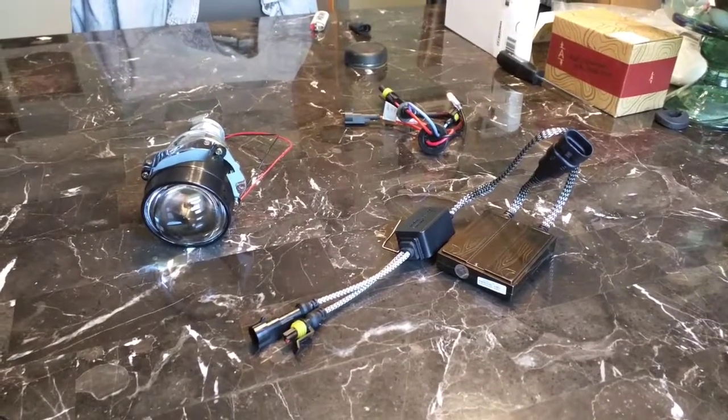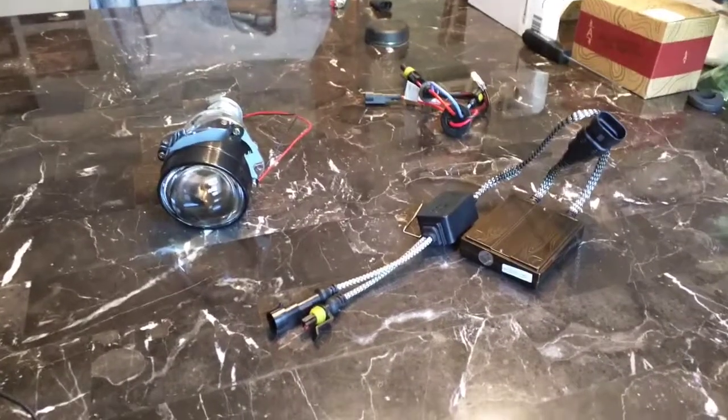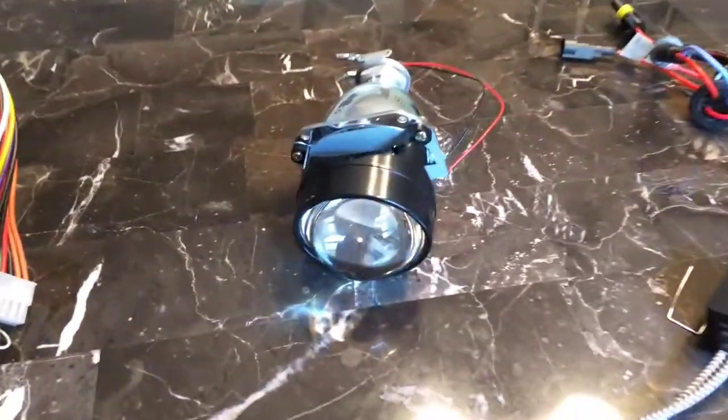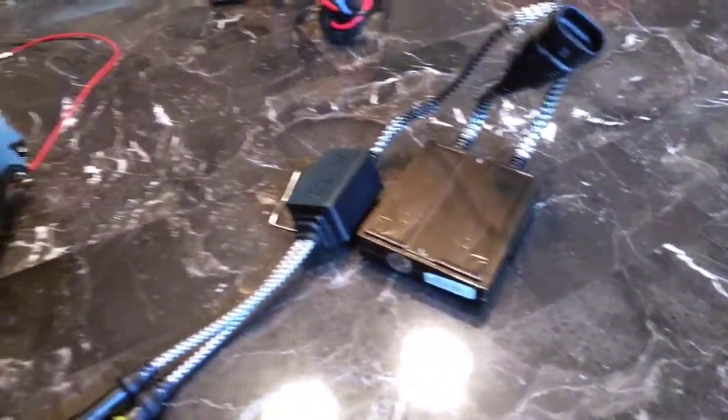I thought I'd make a quick video showing the three basic components of an HID projector system. Basically you have the projector itself, the HID bulb, and the ballast and igniter.